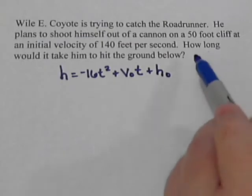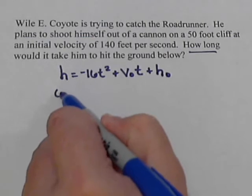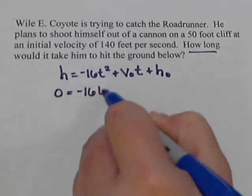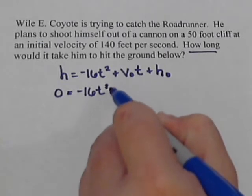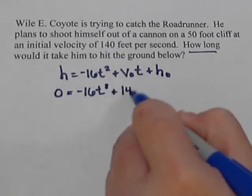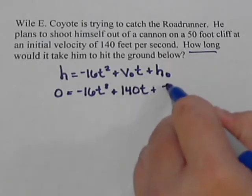We're looking for the time because it says how long. Our ending height, he'll end up on the ground, so that'll be zero. We're solving for the t. Our initial velocity is 140. And our initial height is 50.